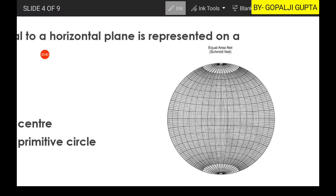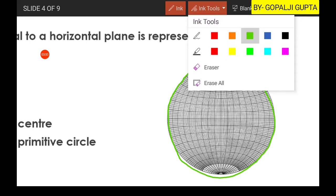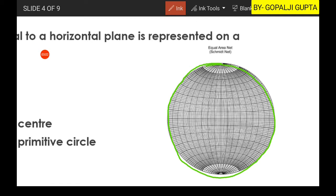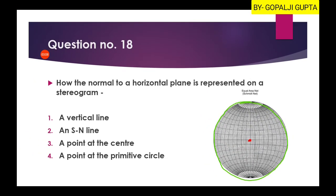So as you can see here a stereo net is showing. Now it is asking the normal to a horizontal plane. So horizontal plane will lie along the great circle, or we can say that is the primitive circle, and the normal means the 90 degree angle. So definitely the 90 degree angle we will count from anywhere it will lie at the center of circle.